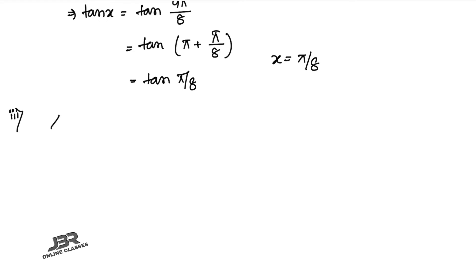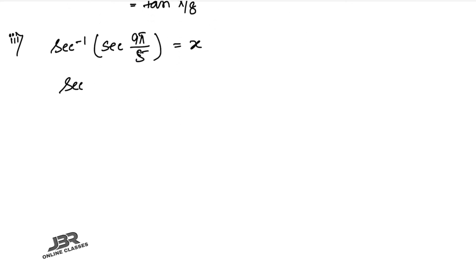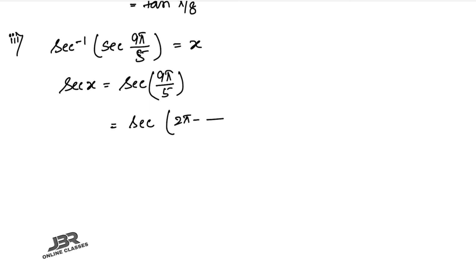Sum number 6.3: sec⁻¹(sec(9π/5)) = x, so sec x = sec(9π/5). Writing 9π/5 = 2π − π/5 and using sec(2π − θ) = sec(θ), we get sec(π/5). Therefore x = π/5.